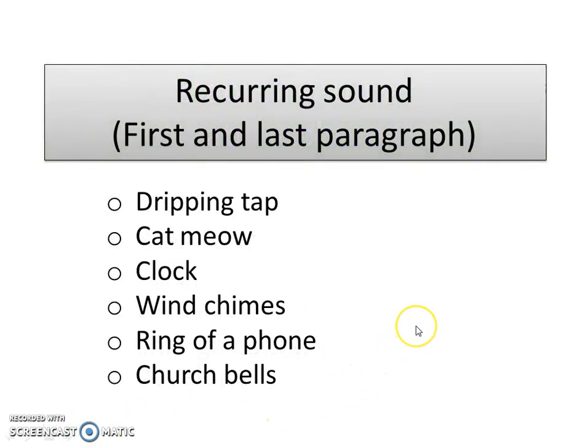Another thing you can do to give a sense of form and cyclical structure to your writing is have a recurring sound — a dripping tap, a cat's meow, a clock, wind chimes. For example, if you were sat listening to the water trickling by and thinking about your lost love, in your last paragraph you could return to that — perhaps now you're more hopeful, listening to the water trickling by thinking 'it's going to the sea, it's going somewhere new, perhaps I'm going somewhere new with my life.' This relates the first and last paragraph together.